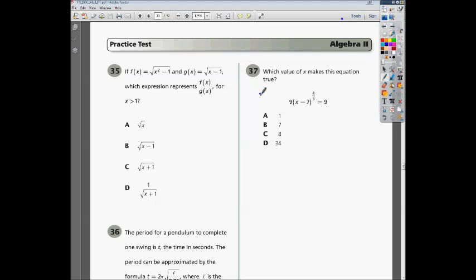Alright, this is the Algebra 2 practice ELC question 35 and it says if f of x equals the square root of x squared minus 1 and g of x equals the square root of x minus 1, which expression represents f of x divided by g of x for any x greater than 1?